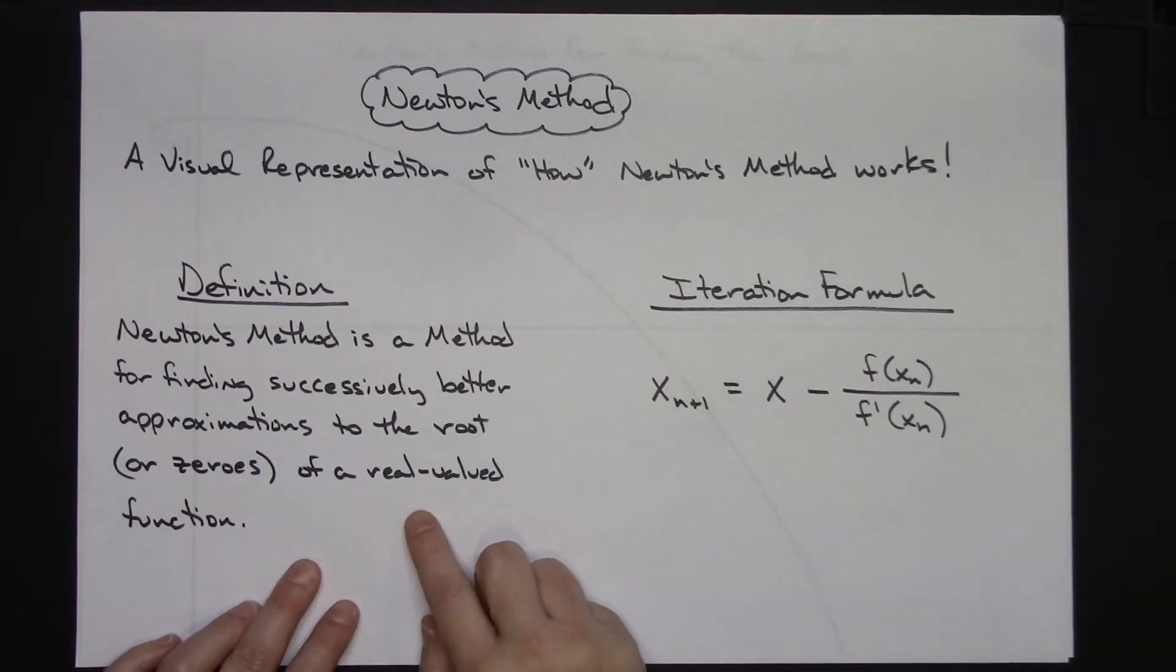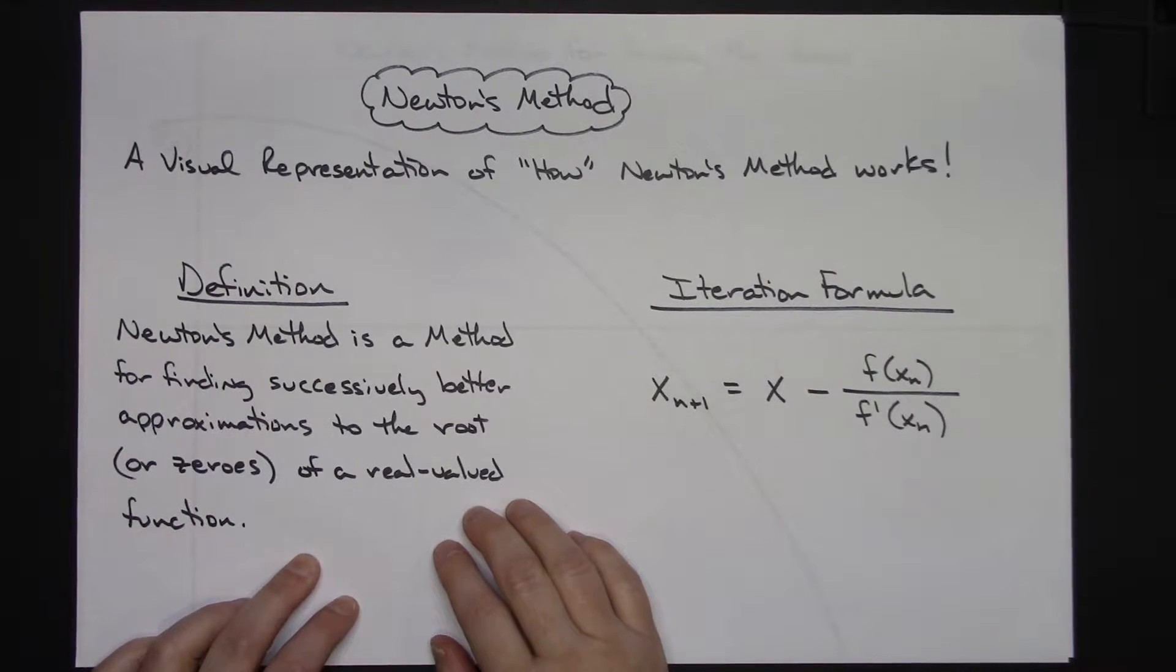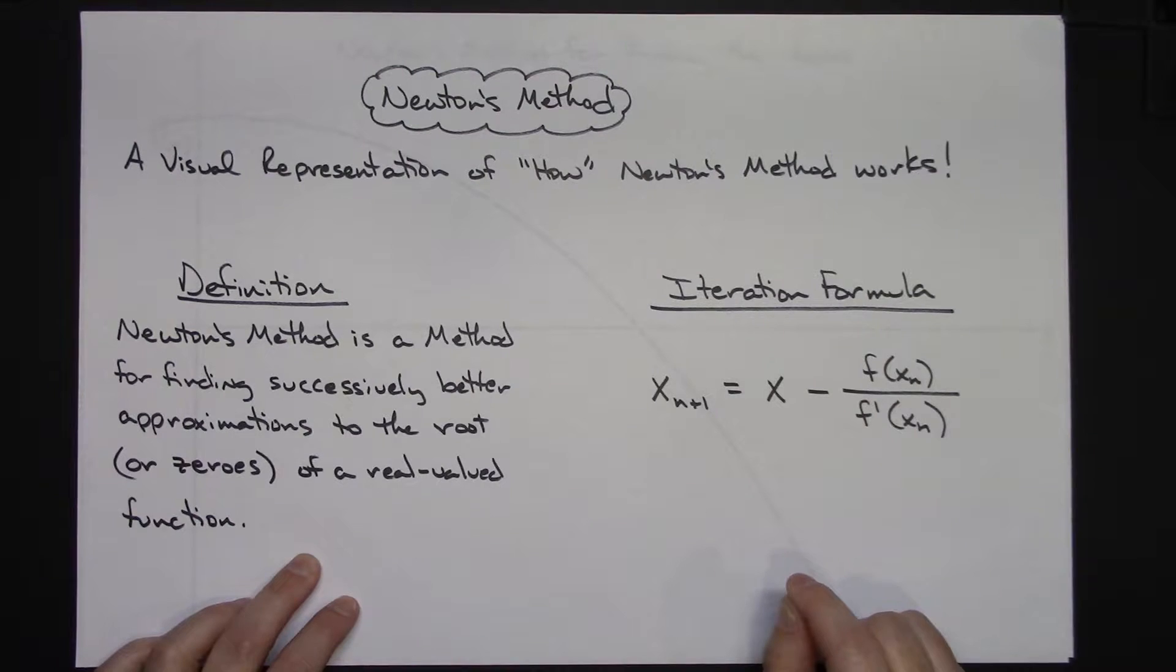To begin with, we will go over a brief definition here. Newton's method is a method for finding successively better approximations to the roots or zeros of some real valued function that you might be working with.